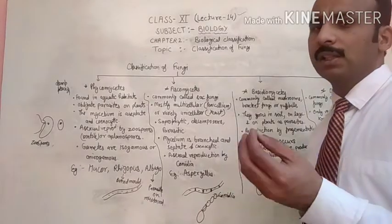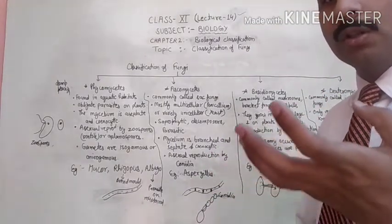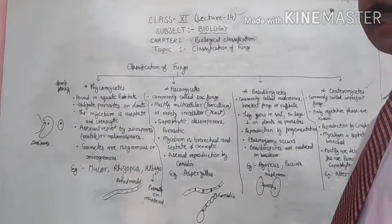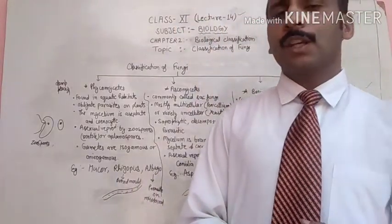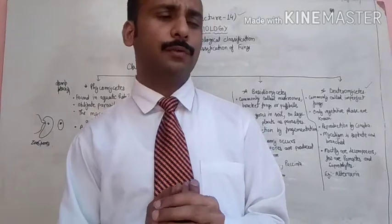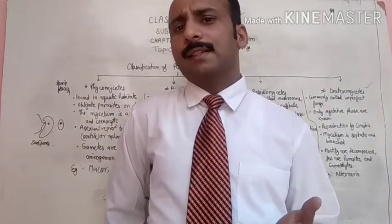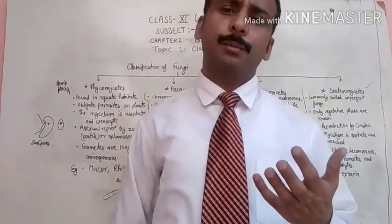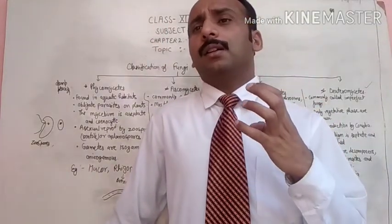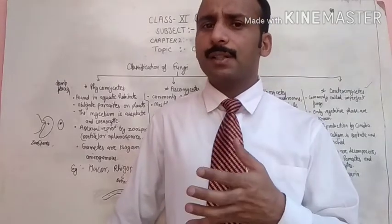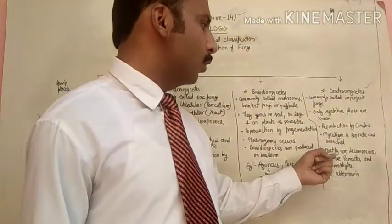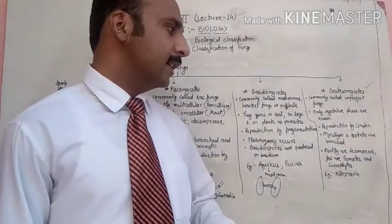Reproduction in Deuteromycetes occurs by conidia. Mostly they are decomposers, while few are parasites and saprophytes. Decomposers break down organic complex material into simple substances. The example is Alternaria.